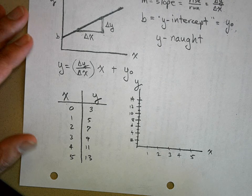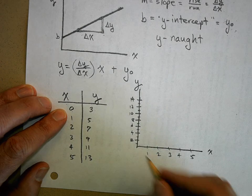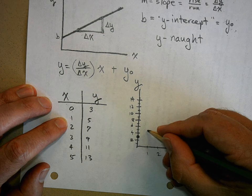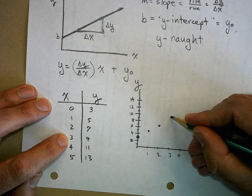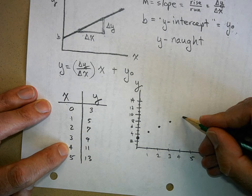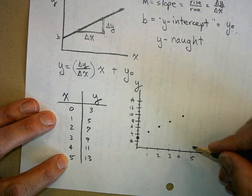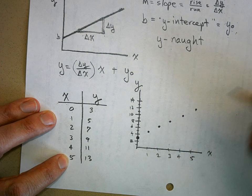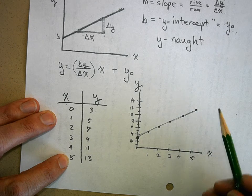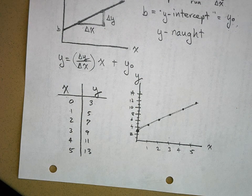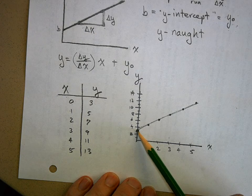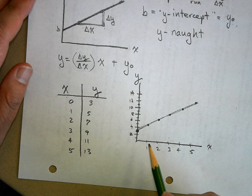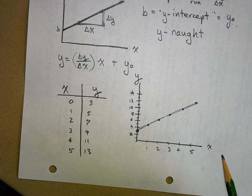Now I'm going to start graphing. When X is 0, Y is 3. When X is 1, Y is 5. When X is 2, Y is 7. Three and nine, four and eleven — and look, it's a nice straight line, even with my crummy hand sketch. Five and thirteen is right there. So now I've got a nice straight line, and I can definitely say there is a linear relationship between the variables.